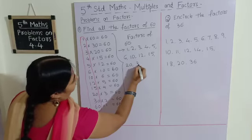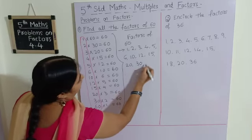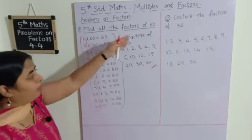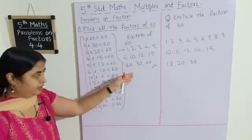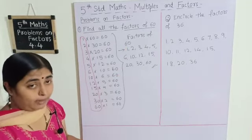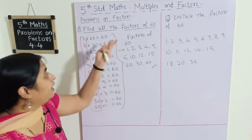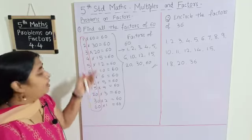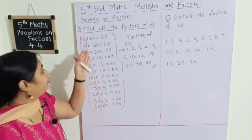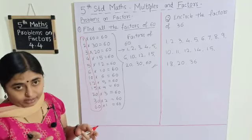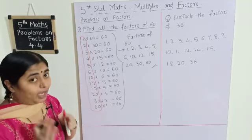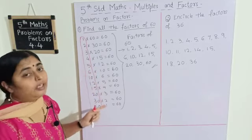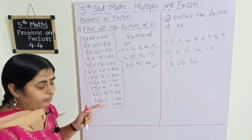These are all the factors of 60. If sometimes they ask to write any 4 factors of 60, that will be very easy — we can just take any 4 numbers. But when they ask for all the factors, we have to follow this method. It will be easier for you.